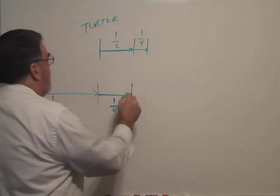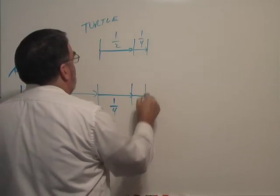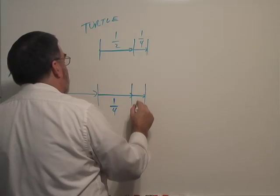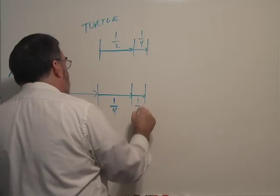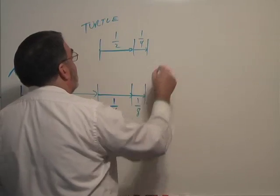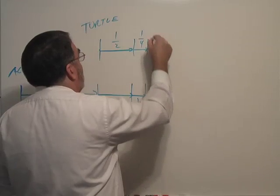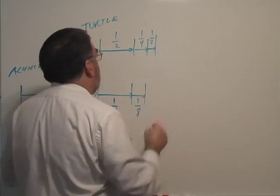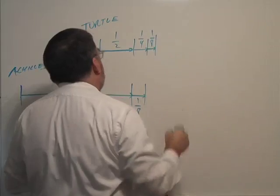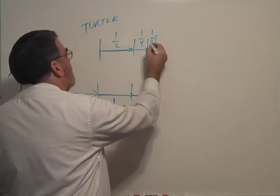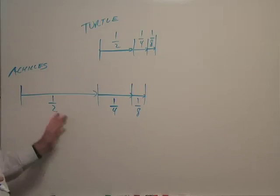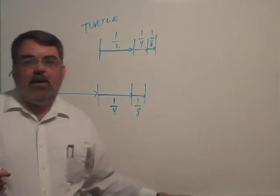And let's do one more stage. Achilles moves ahead to where the turtle was at the end of the second stage. It takes one eighth of a minute. And the turtle has moved ahead again by one eighth of a minute.